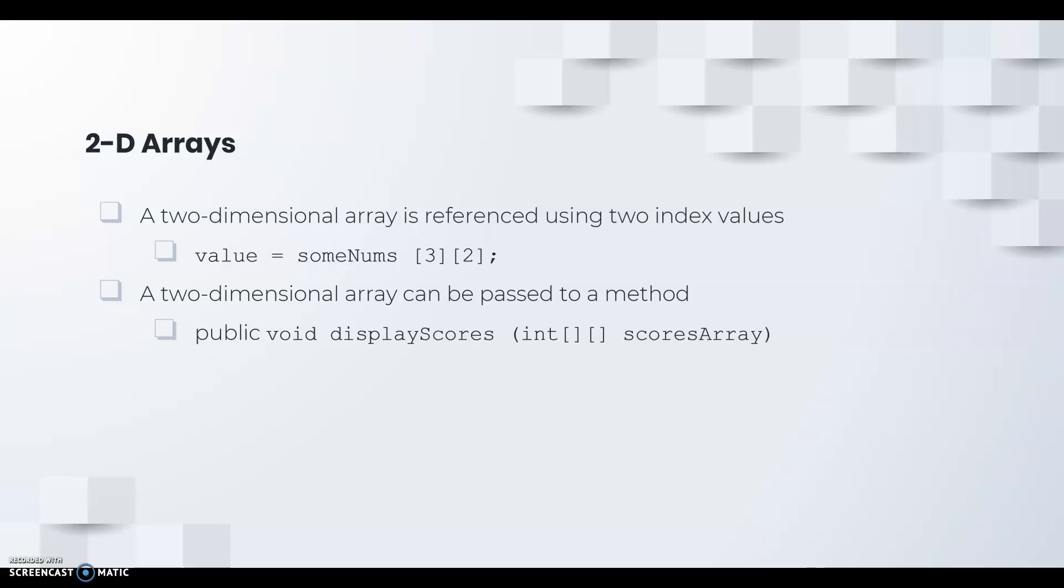A two-dimensional array can also be passed to a method. For example, on the screen here we've got public void display scores and then the parameter of the display score method is a 2D int array and the formal name of the parameter is scores array.